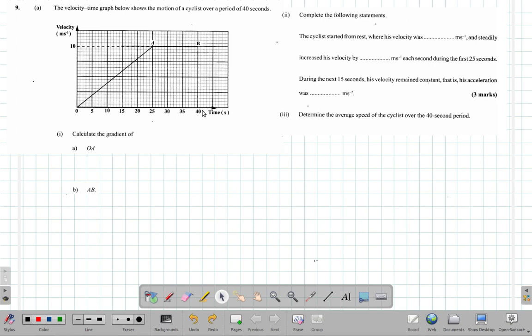The horizontal axis is time in seconds, vertical axis is velocity in meters per second. We have a line from origin O to A sloping upwards. Between A and B it's flat. Let's see what they asked us to do.